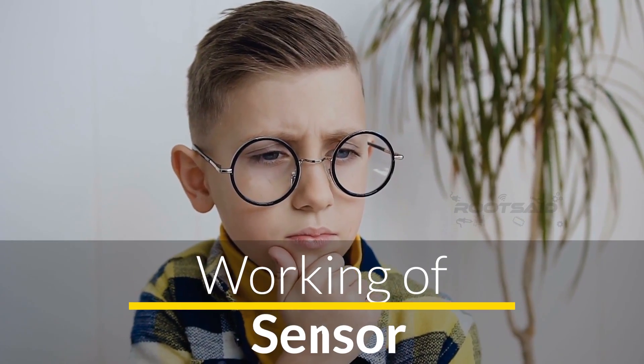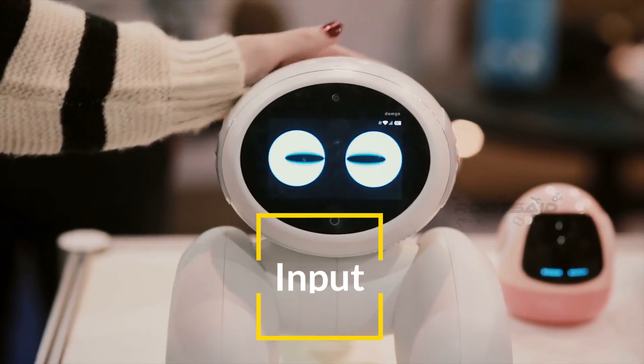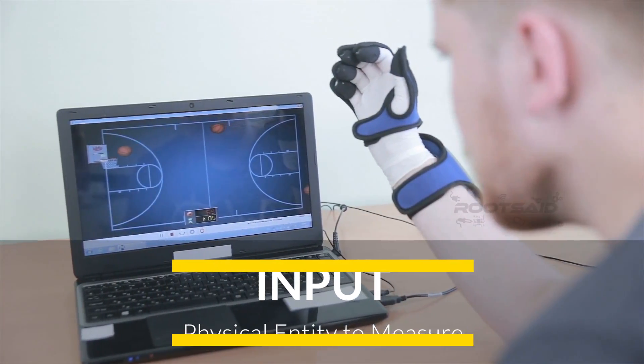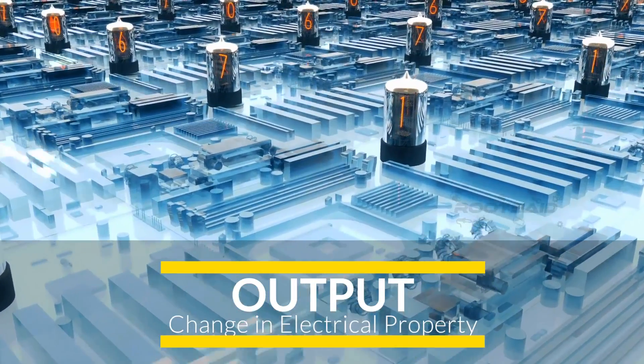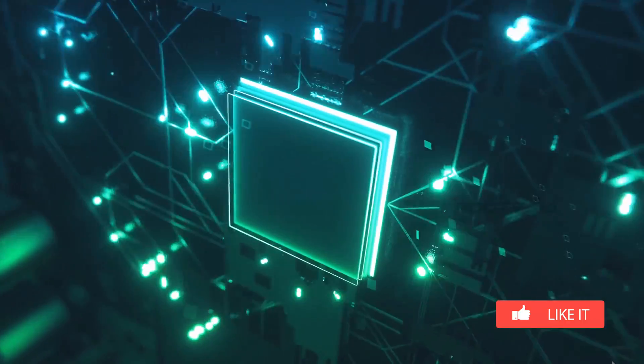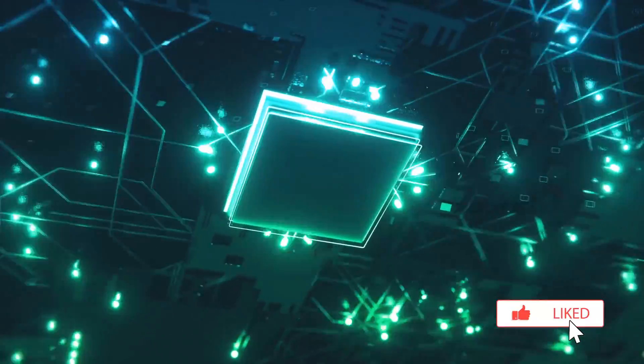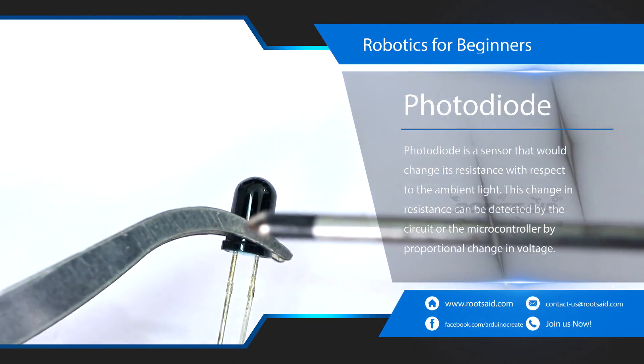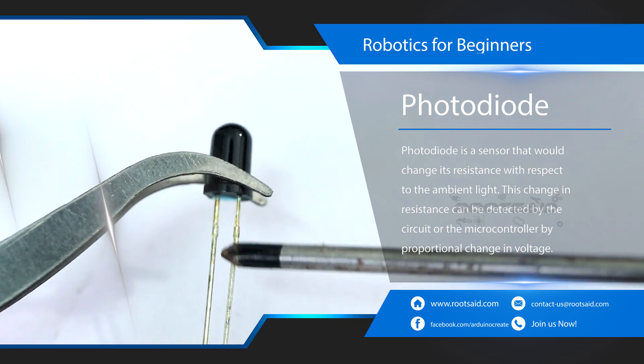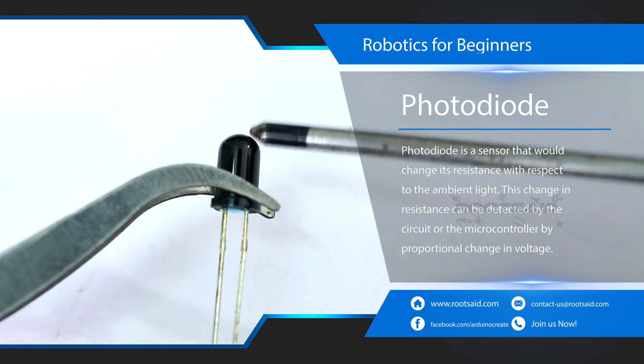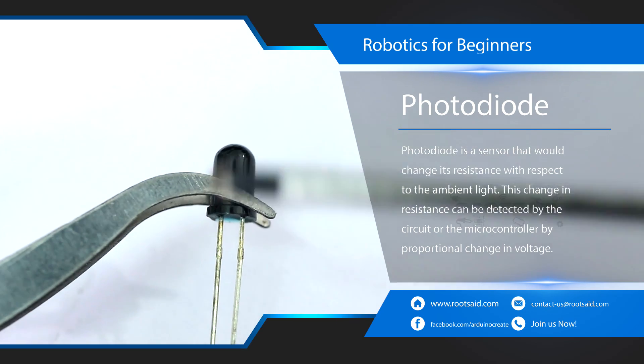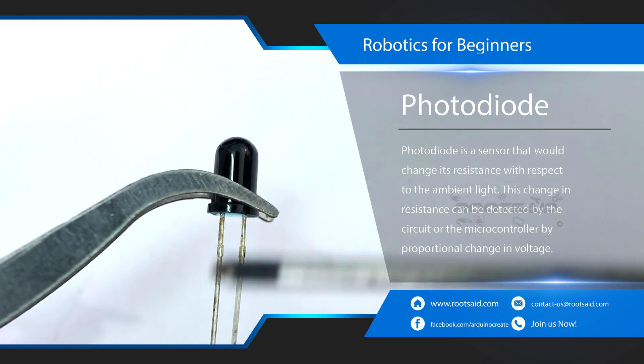How does this sensor work? All the sensors will have an input and an output. The input will be the physical quantity we will be measuring and the output will be the change in electrical property of the sensor element. Sensors react to changing physical quantity by altering their electrical properties. For example, this photodiode which is a sensor that would change its resistance with respect to ambient light. This change in resistance can be detected by the circuit or the microcontroller by proportional change in voltage where it is connected.